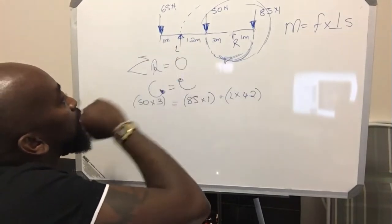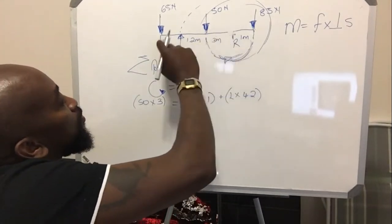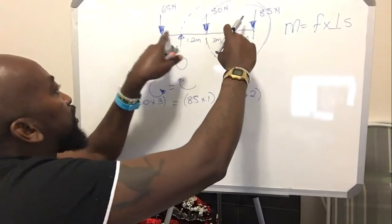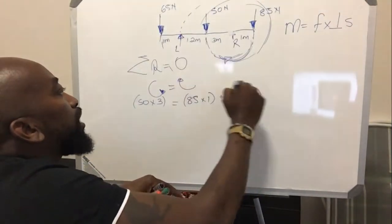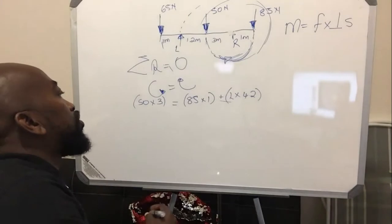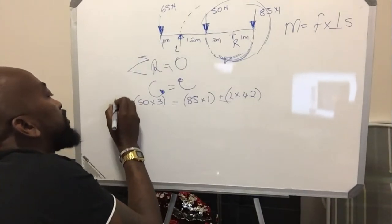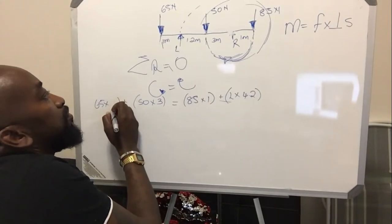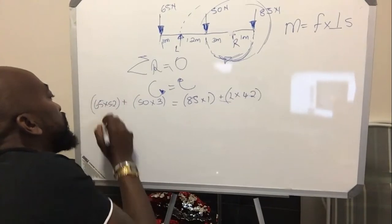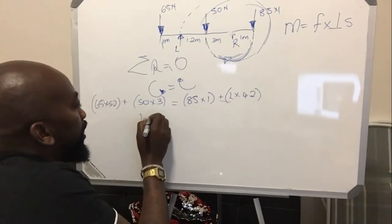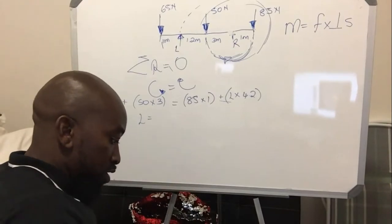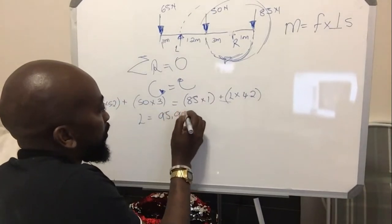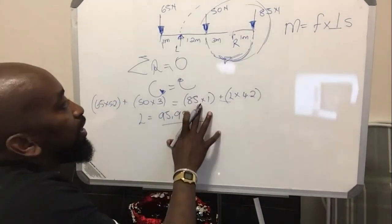Lastly, the 65 is 3 meters plus 1.2 meters plus 1 meter away from R, so that is 5.2 meters. Think of a string attached to the 65 — the force is going downwards, so this looks very much anti-clockwise. It comes onto the anti-clockwise side: 65 times 5.2. Work it out on the calculator — boom boom bam — and L is equal to 95.95 Newtons.